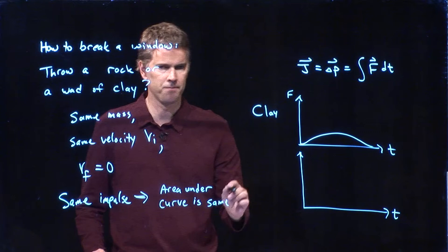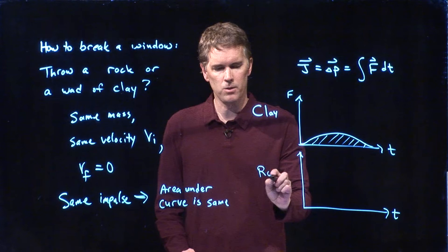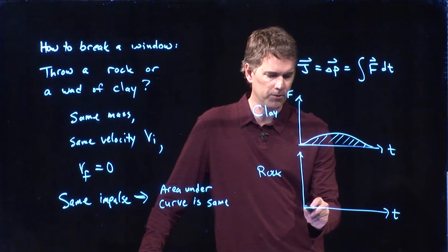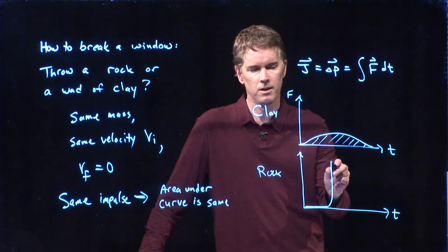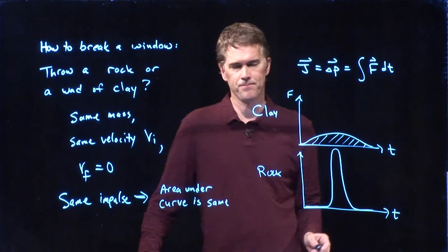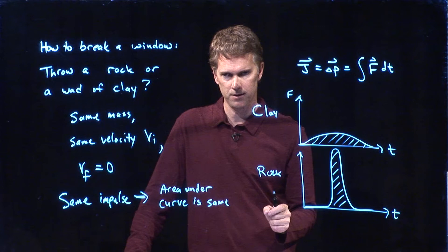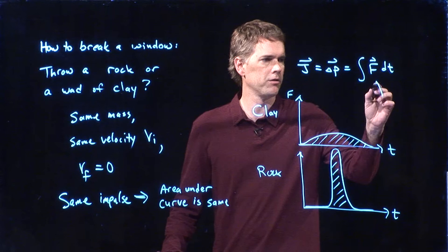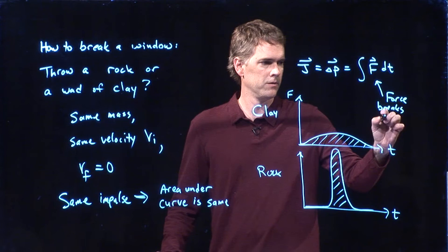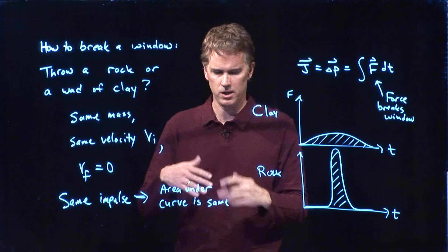Here I have an area that looks like that, and now when I come along with my rock — the rock is rigid, it doesn't bend very much. It hasn't hit the window yet, but then all of a sudden it hits the window and it goes up to some very big force, and then it comes down. If it's going to have the same area as the curve above it — if it goes higher, it has to do that in a shorter amount of time, delta T. And so what, in fact, breaks the window is force. Force breaks the window. You have to apply some force to something to break it.